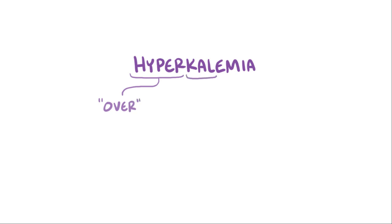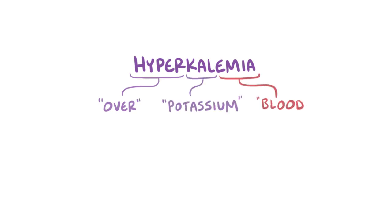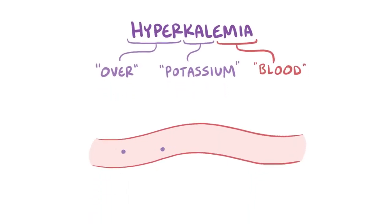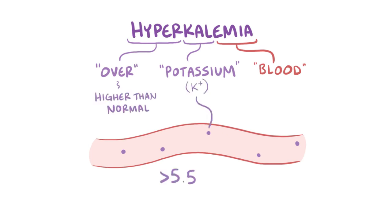With hyperkalemia, 'hyper' means over, 'cal' refers to potassium, and 'emia' refers to the blood. So hyperkalemia means higher than normal potassium levels in the blood, generally over 5.5 milliequivalents per liter.